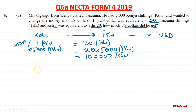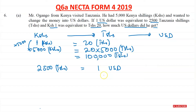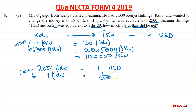Now what we need to do is change these Tanzanian shillings into dollars. We know 2,500 Tanzanian shillings is equal to 1 US dollar. Now we need to know how much 100,000 Tanzanian shillings will be in US dollars. We can use something called the unitary method. We're going to change that into 1 shilling — 1 Tanzanian shilling. To get to 1, we need to divide by 2,500, so that's going to be 1 over 2,500 USD.